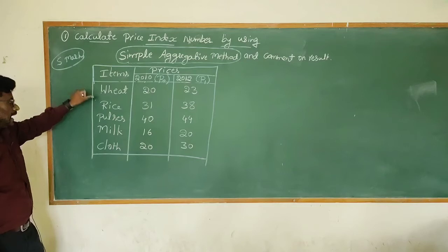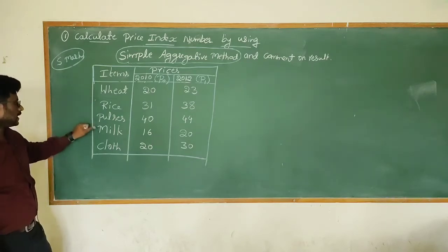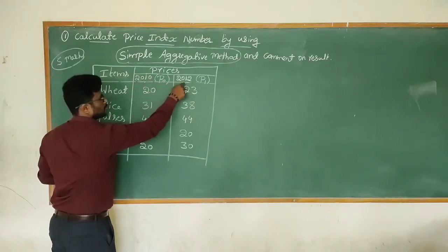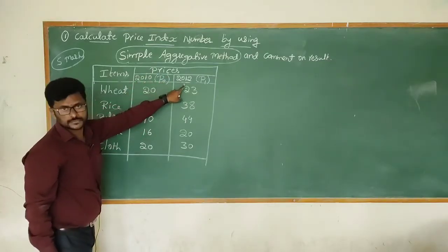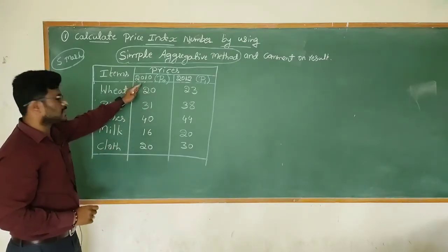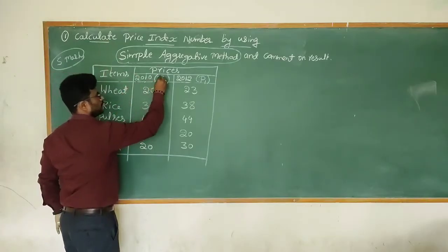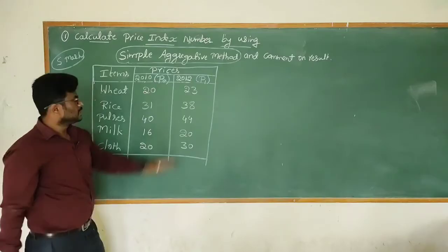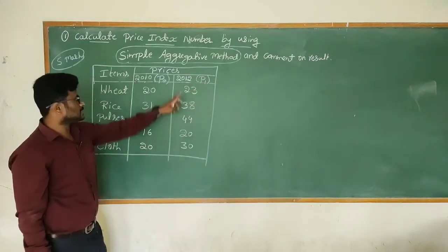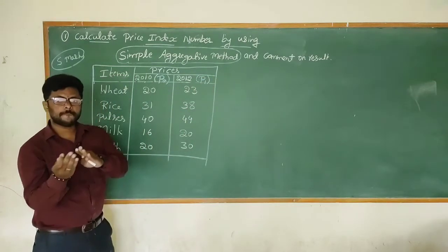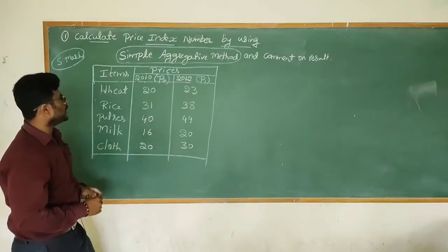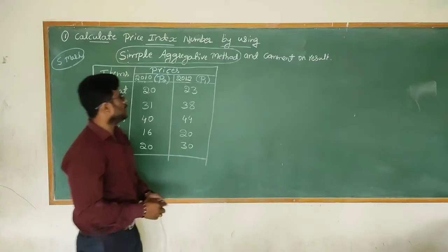Five items are given: rice, pulses, milk, and cloth. Prices are given for two years — 2010 and 2012. Since 2010 is the first year, it is the base year, denoted as P₀. The year 2012 is the present (current) year, denoted as P₁.